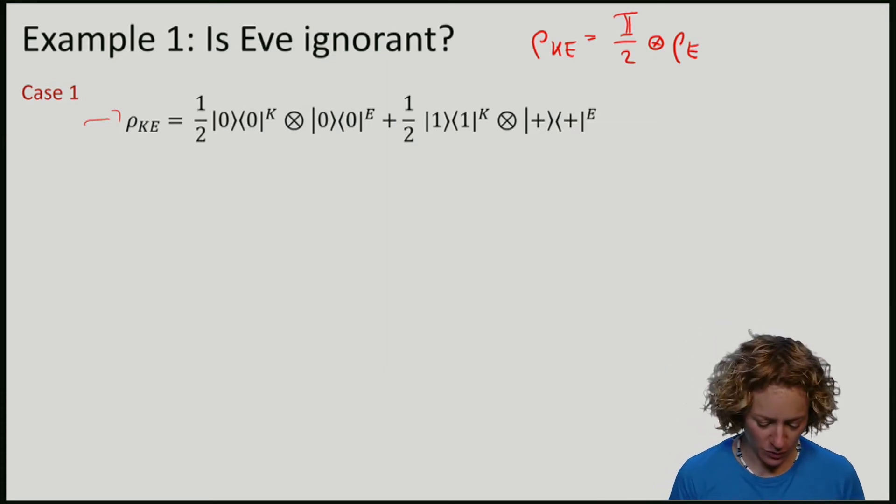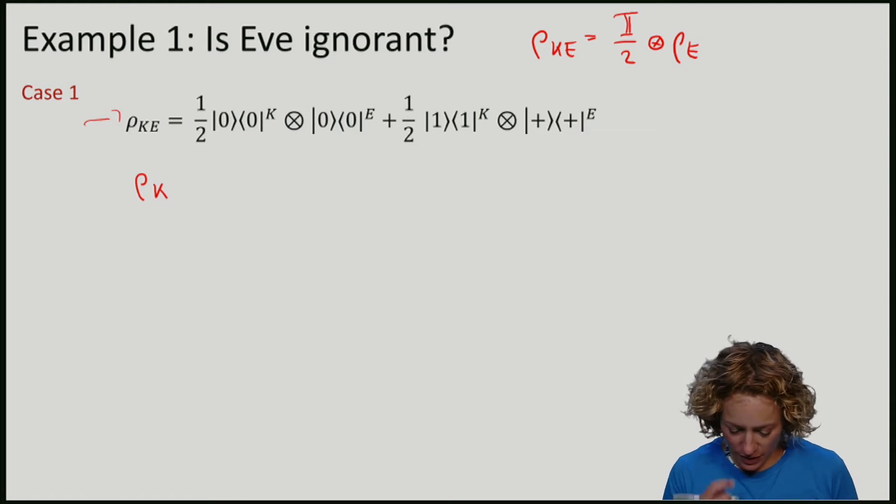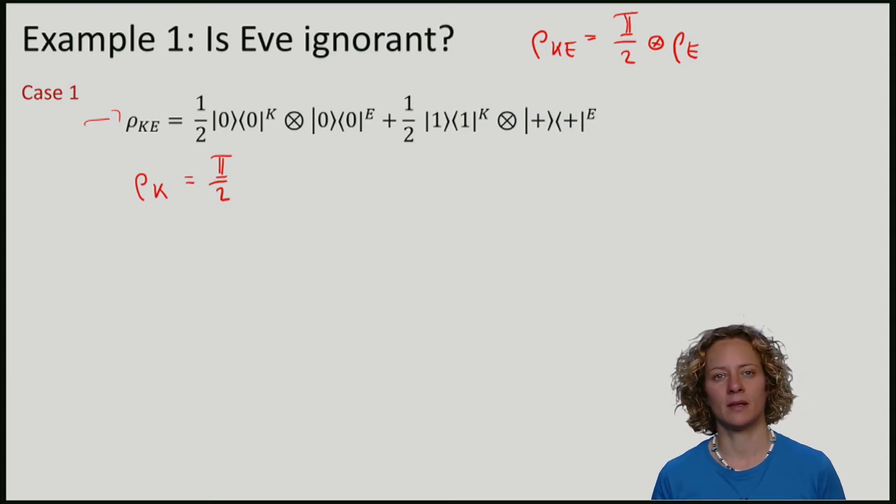Here if we compute rho k, so I'm tracing out e, you can easily see that what we get is in fact the maximally mixed state. So that's good, I'm maximally mixed on k.